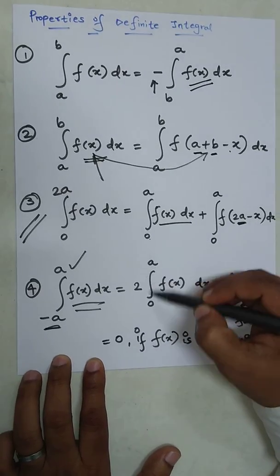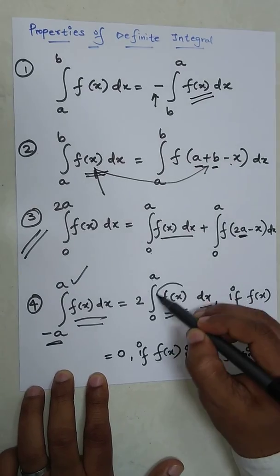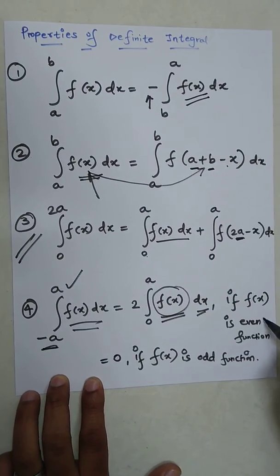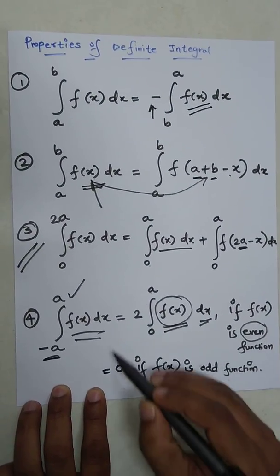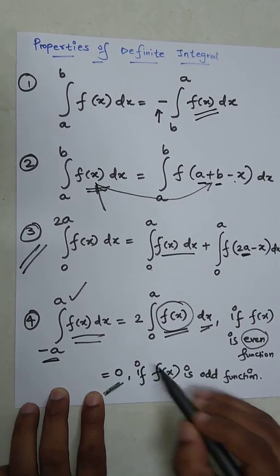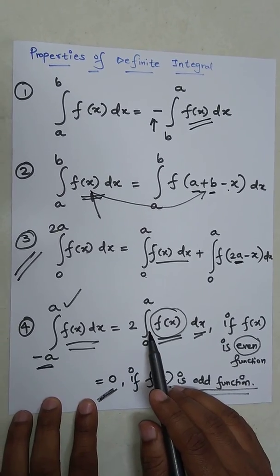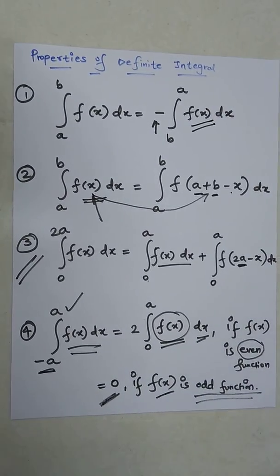If this function is even function, and this is equal to 0 if f of x is odd function. So these are the four properties of definite integral. Thank you.